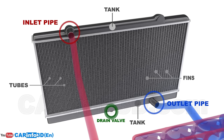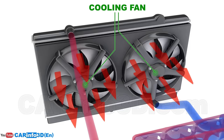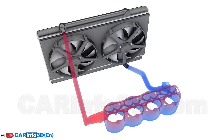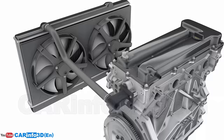A drain valve is normally located near the bottom of the radiator. The radiator is also equipped with one or more fans that boost the flow of air traveling through the radiator, in case the system fails to cool the liquid to the proper temperature. When a specific temperature is surpassed, the fan is turned on using the radiator coolant fan switch or, more commonly, the engine coolant temperature sensor. The sensor also displays the current coolant temperature to the driver on the dashboard. Typically, the sensor is positioned near the engine coolant outlet.